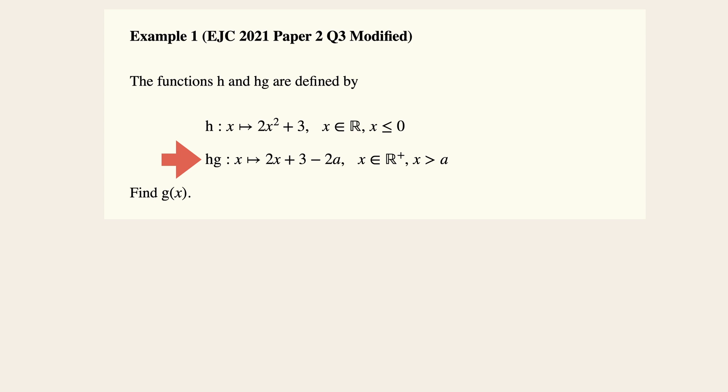Now the technique is this: let's start to substitute the function g into all the x values within the function of h. That means we are forming the composite function hg. So we could then equate that to the given function hg, which is 2x plus 3 minus 2a.